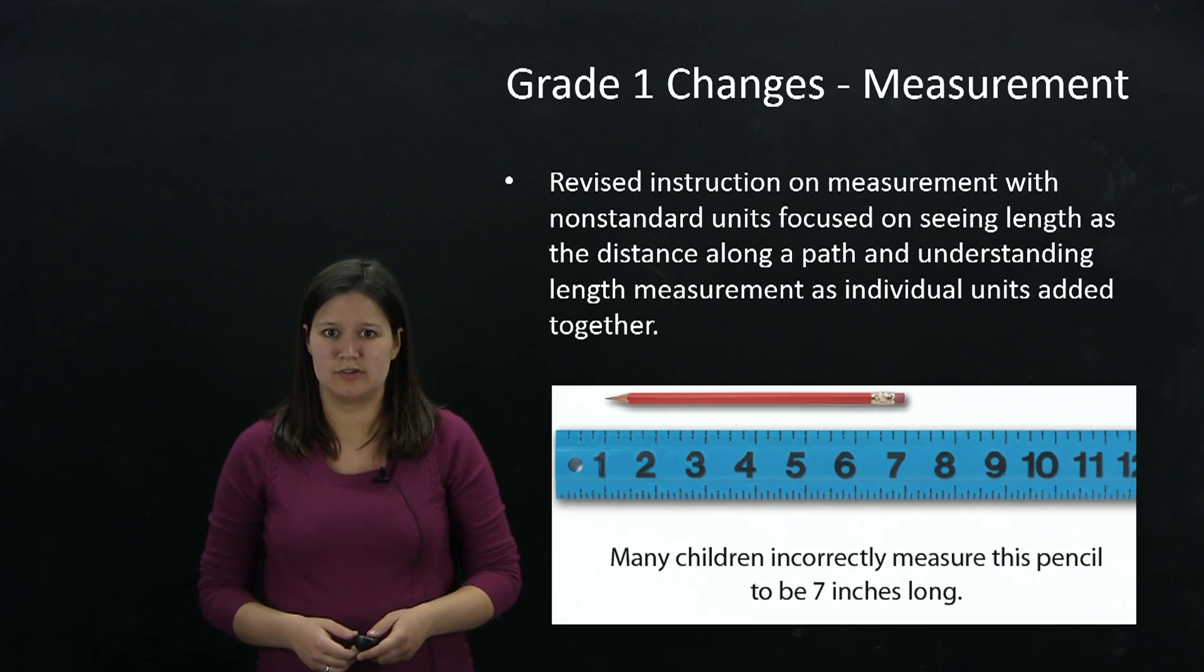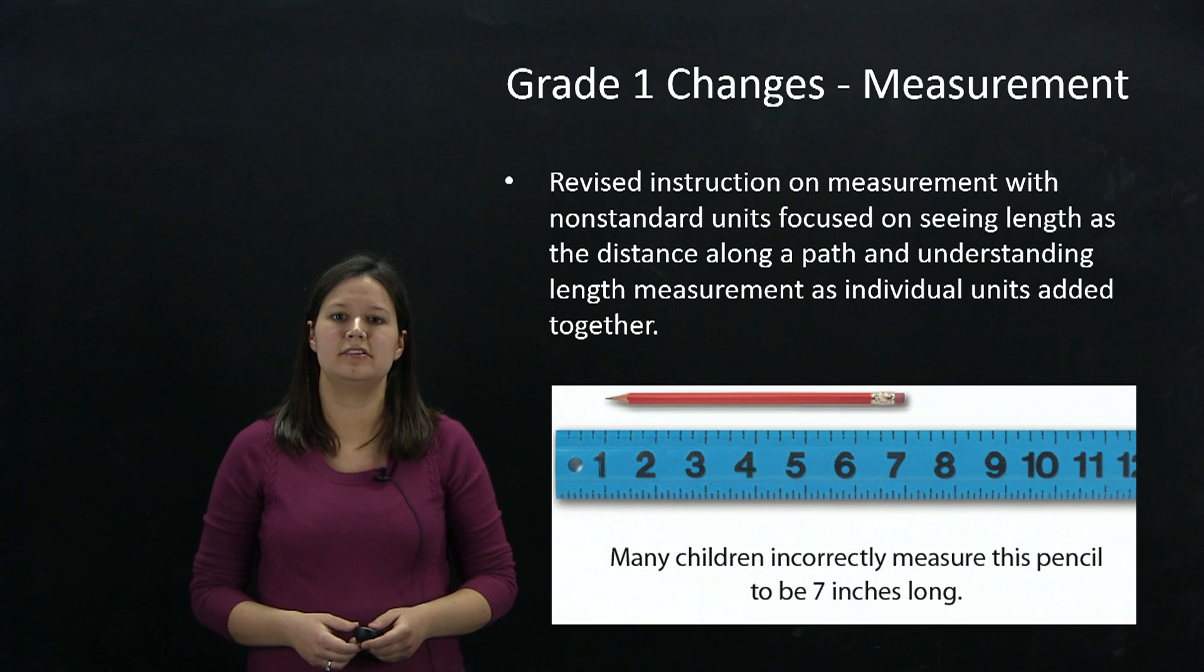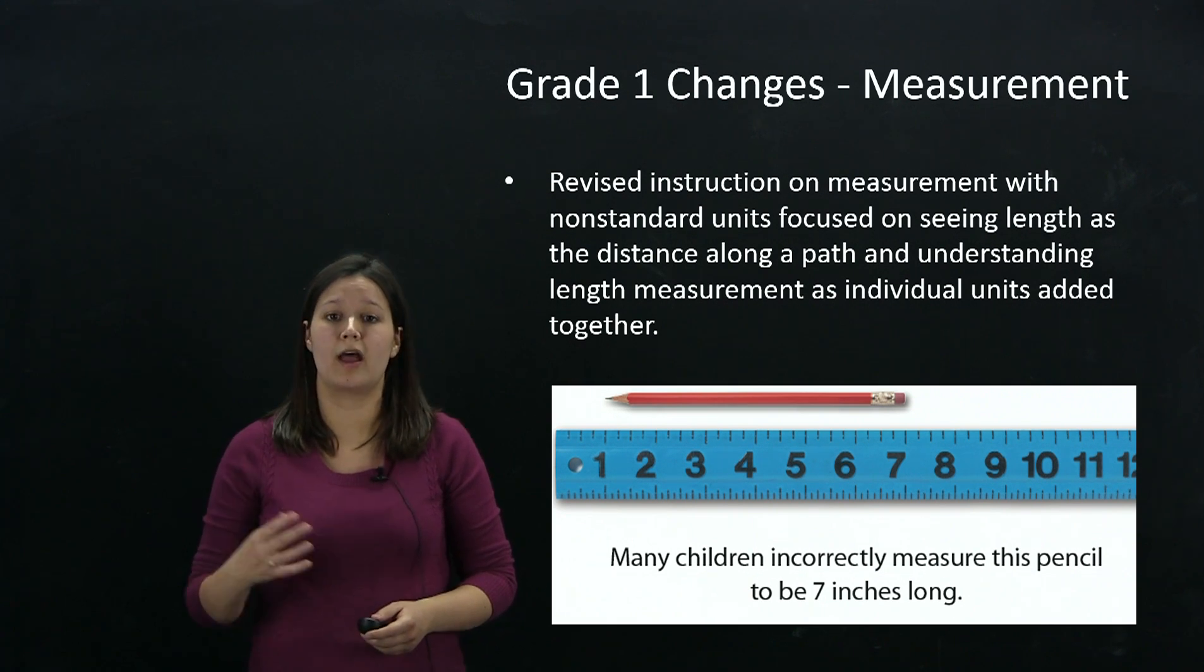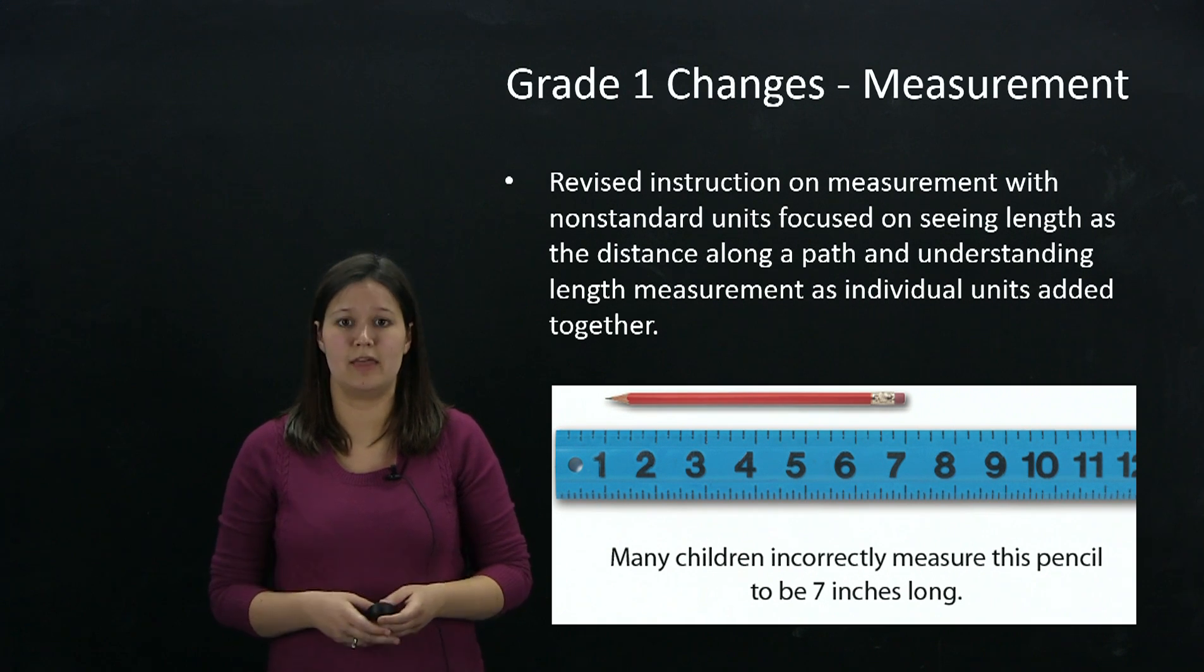There have also been substantial changes to the measurement sequence to focus on the conceptual underpinnings of length measurement. This includes understanding length as measuring the distance along a path, understanding length as additive, and understanding length as involving unit iteration, or copying units multiple times and then adding the number of units together to understand length.